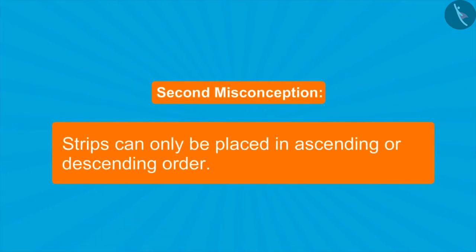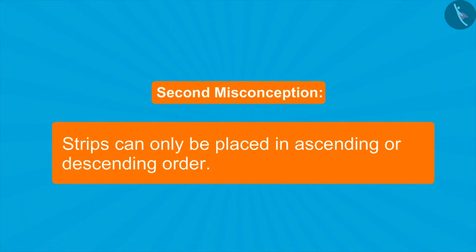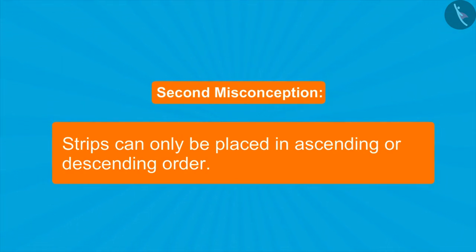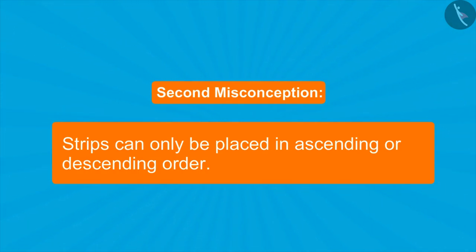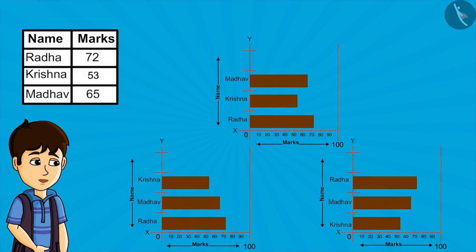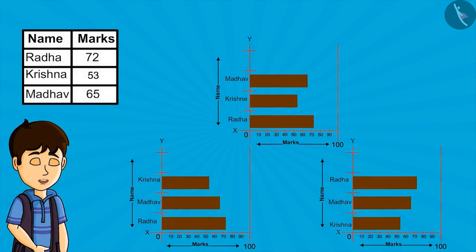Sometimes we also have this confusion whether we can place strips only in ascending or descending order. But kids, we can place strips in any order. We only need to keep in mind that the strip represents the right value.